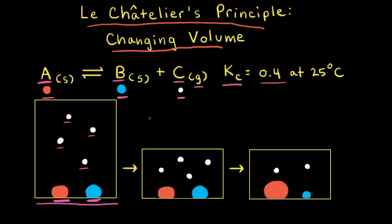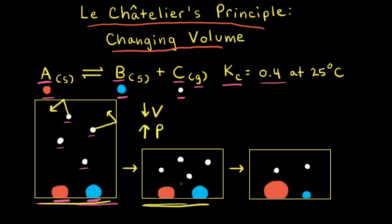Let's introduce a stress to our reaction mixture at equilibrium by decreasing the volume of the container. Looking from the first particulate diagram to the second, we can see there's been a decrease in the volume. That's going to cause an increase in the pressure, because pressure comes from these gas particles slamming into the sides of the container. If we decrease the volume, there's less distance for these particles to travel before they slam into the sides, which increases the collision frequency and therefore the pressure increases.